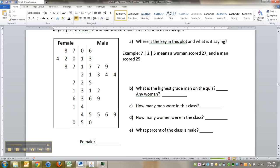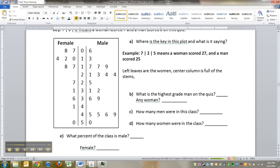So in other words, the left side leafs are the women, but they're still leafs, right? The center column is full of the stems and the right leaves are the men.